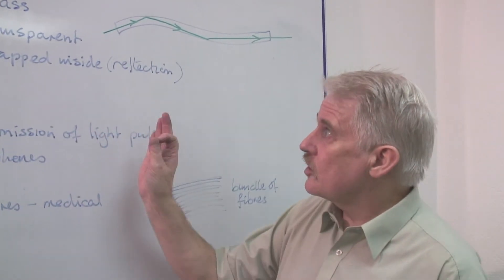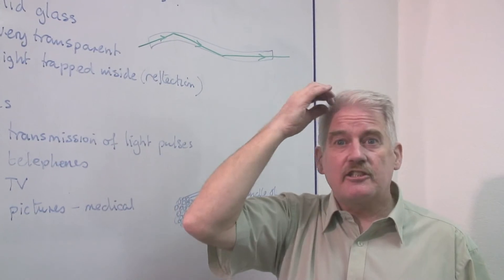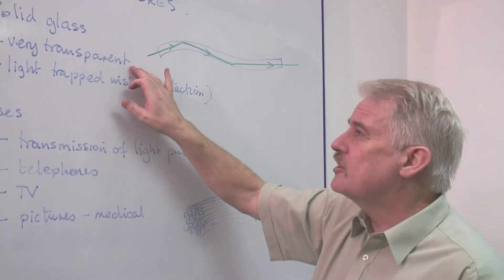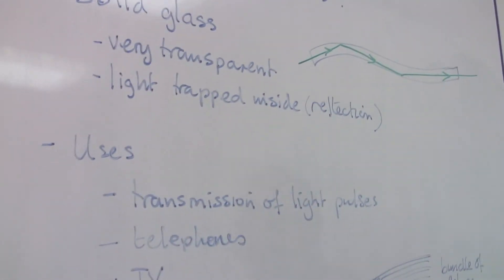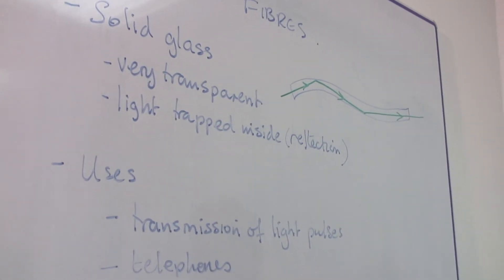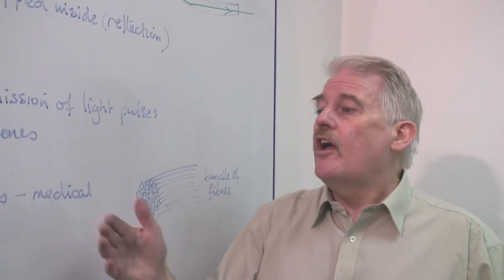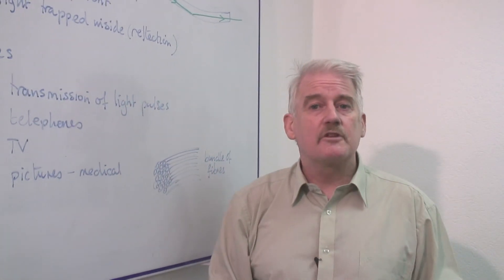So basically, what is an optical fibre? It's a solid piece of glass, actually thinner than one of the hairs on your head. It is very transparent and it's light that is trapped inside it. It's light pulses that we send down it to transmit telephone and TV signals and other kinds of pictures. So that is what optical fibres are.